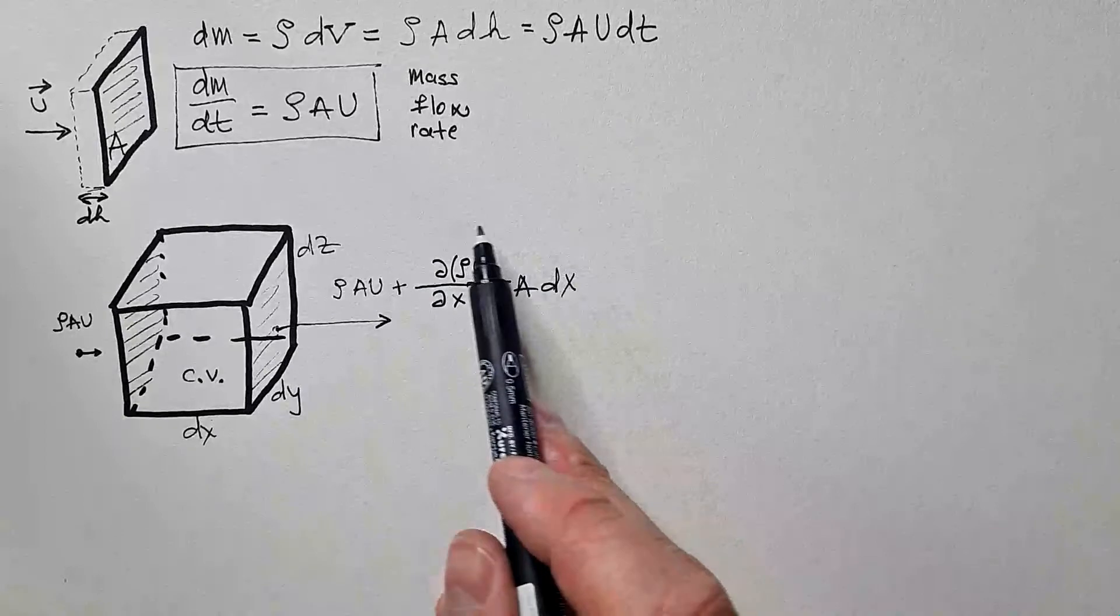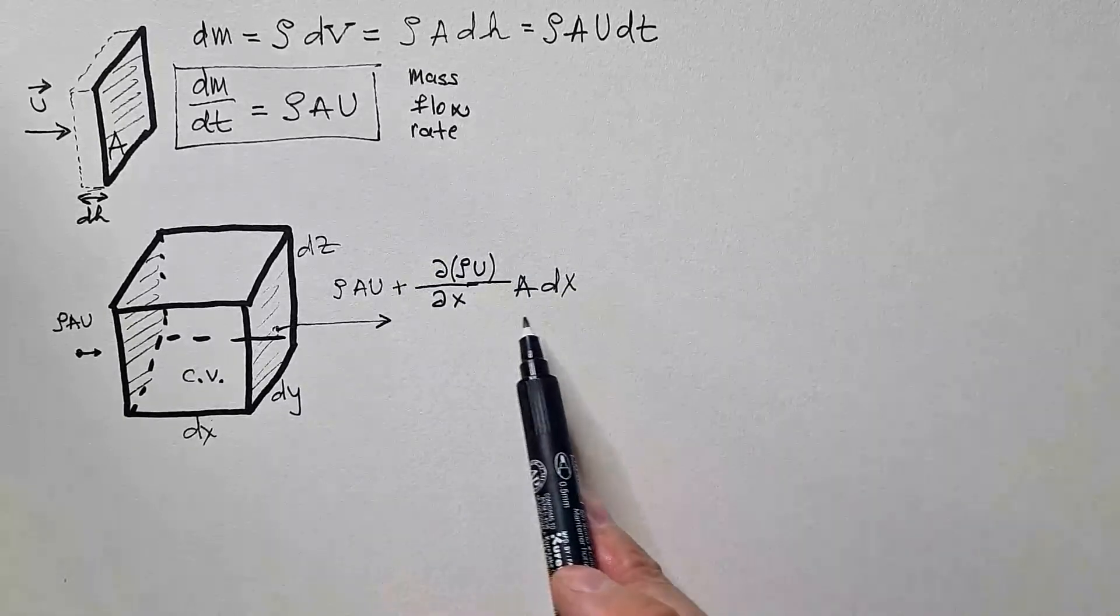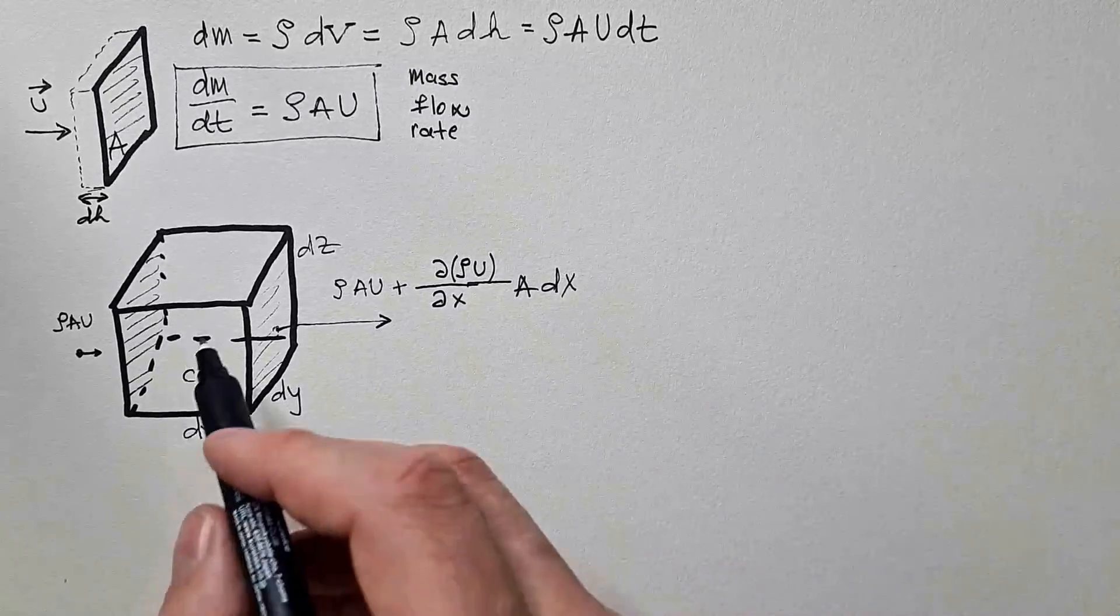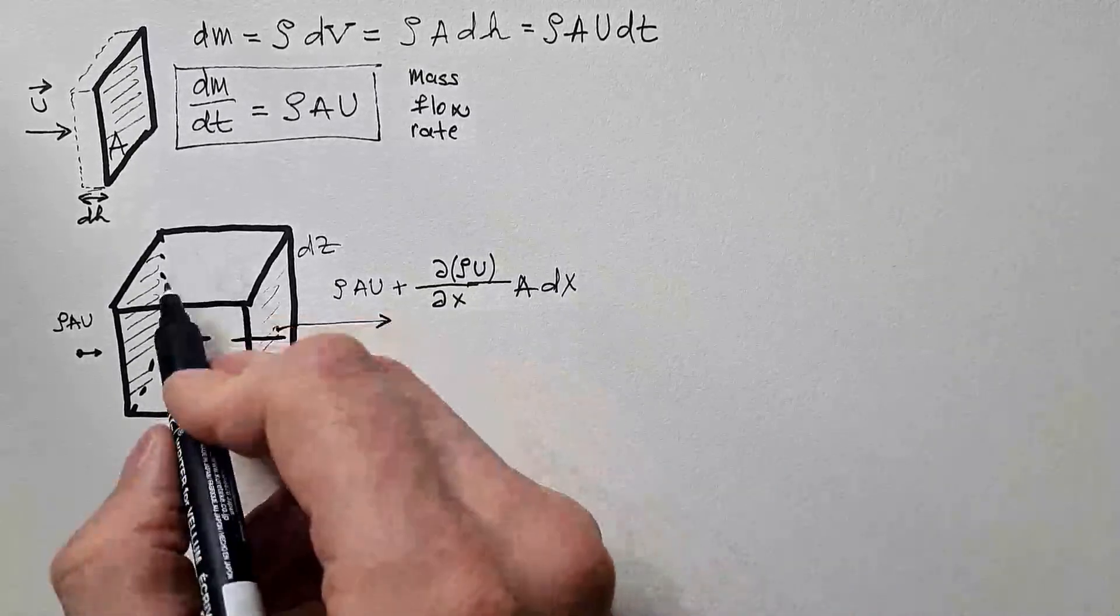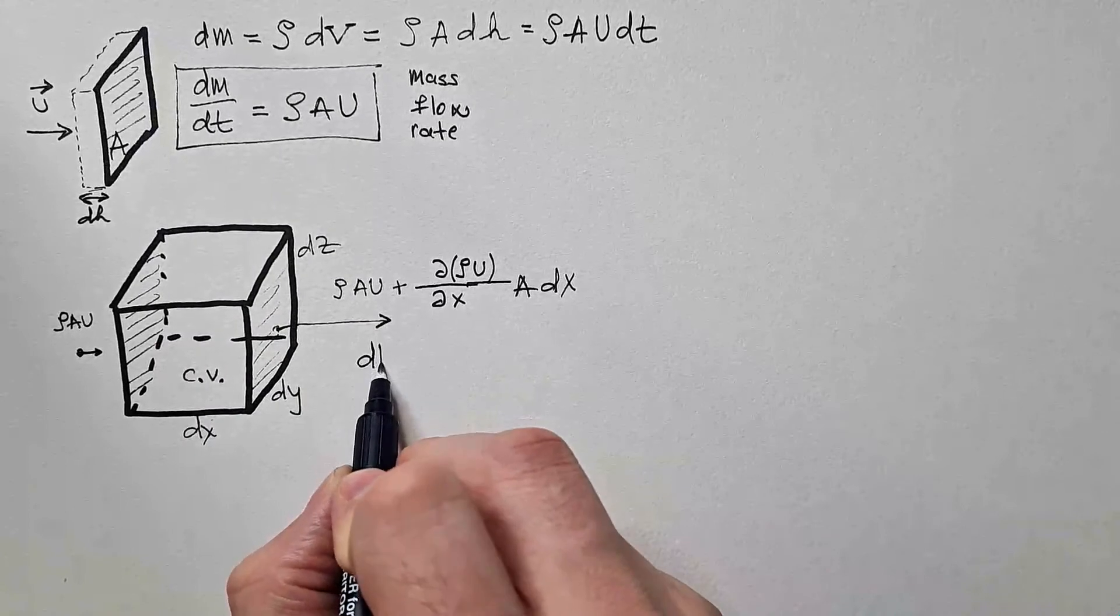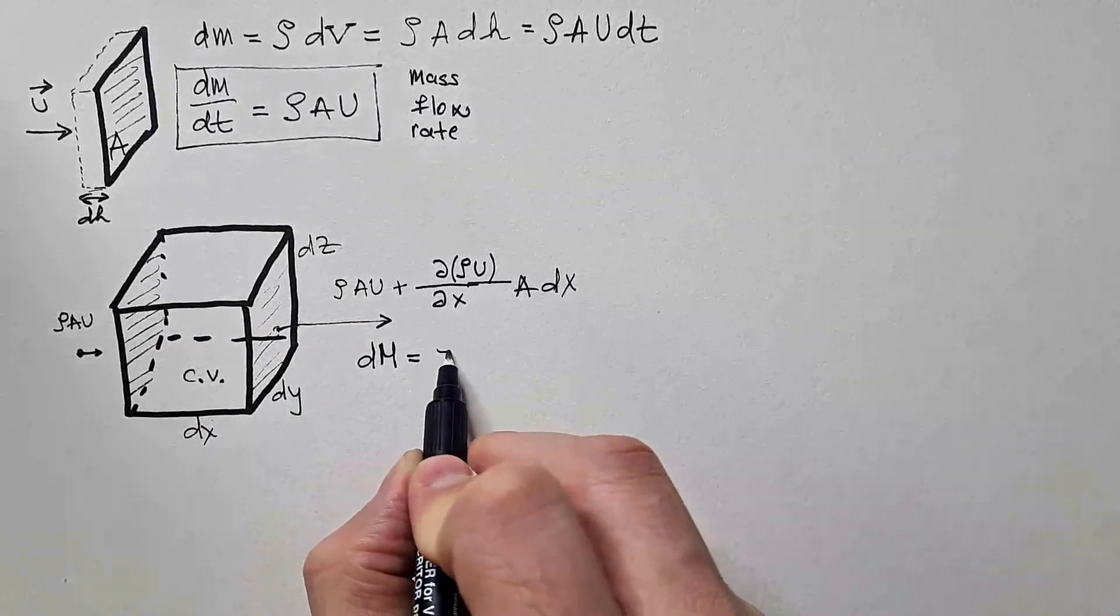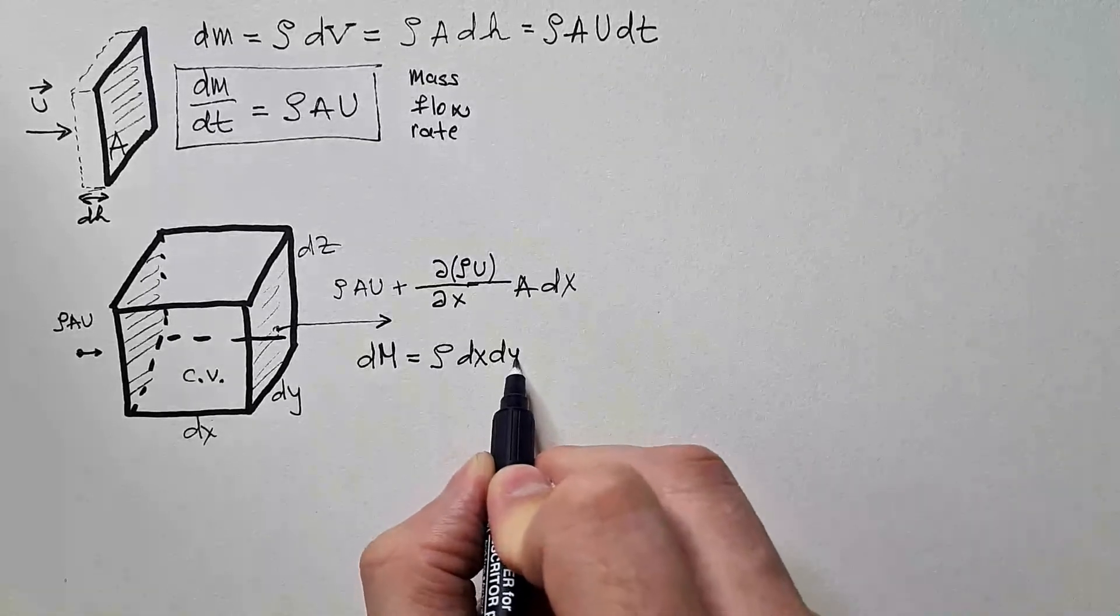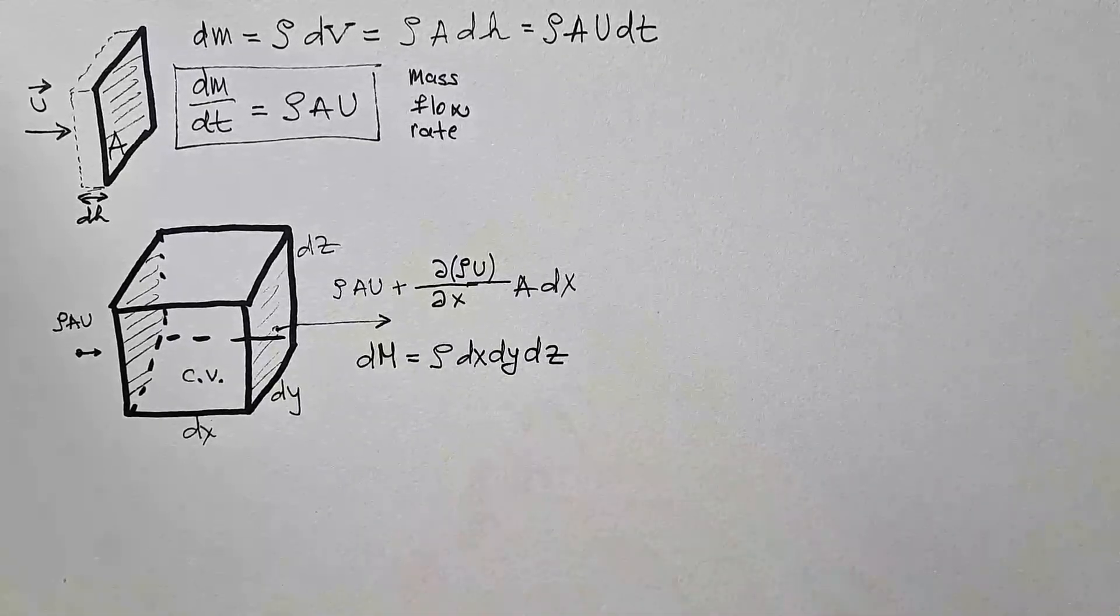Here, as you see, I tried to explain the physical meaning of Taylor series expansion as I was writing it. At the same time, mass of fluid in this control volume is dm. And that is density of this fluid times volume. And volume is dx, dy, dz.